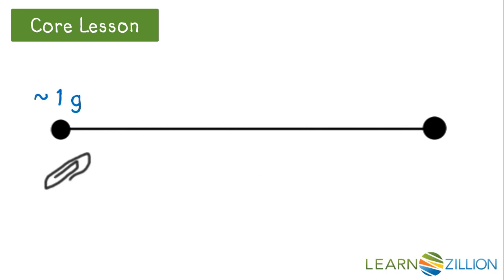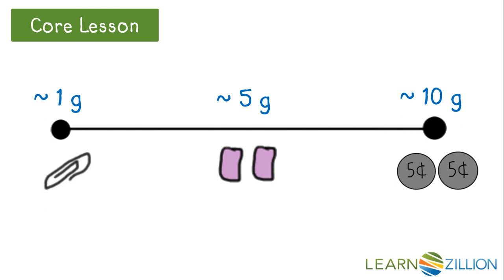Let's use two of the objects we just learned about to estimate the mass of something we do not know. Remember, a paperclip has a mass of about 1 gram, and two nickels have a mass of about 10 grams. Using that, what do you think is the mass of these two pieces of gum? The mass is about 5 grams.